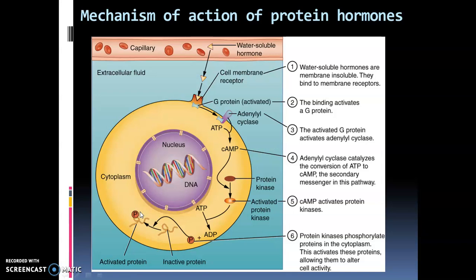To summarize the action of protein hormones: protein hormones have membrane-bound receptors. When the hormone binds, the G protein on the cytoplasmic side is activated. The G protein activates adenylyl cyclase, which converts ATP to cyclic AMP — the second messenger. Cyclic AMP activates protein kinases, which phosphorylate inactive proteins in the cytoplasm. The phosphorylated proteins are now active and bring about the metabolic changes within the cell. That is the mechanism of action of protein hormones.